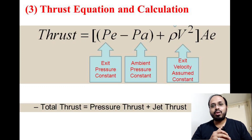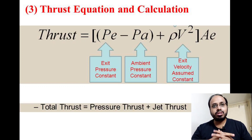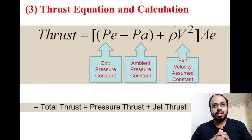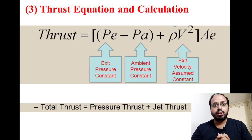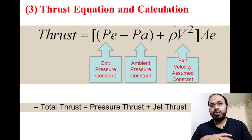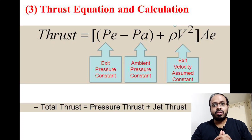The thrust equation is: Total Thrust = Pressure Thrust + Jet Thrust, which expands to: F = (pe − pa) × Ae + ρv² × Ae, where pe is the exit pressure, pa is ambient pressure, Ae is the exit area, and ρv² × Ae represents the jet thrust from momentum principles. This is the complete total thrust equation for a rocket engine.